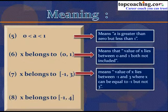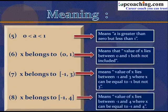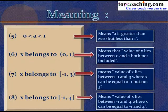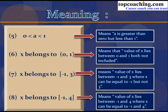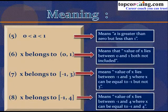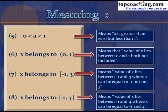If x belongs to [-1, 4], both brackets are closed, meaning x lies between -1 and 4 and can also take the values -1 and 4 — both endpoints are included. Summarizing: open brackets exclude endpoints; half-open brackets include only the closed endpoint; and closed brackets include both endpoints.